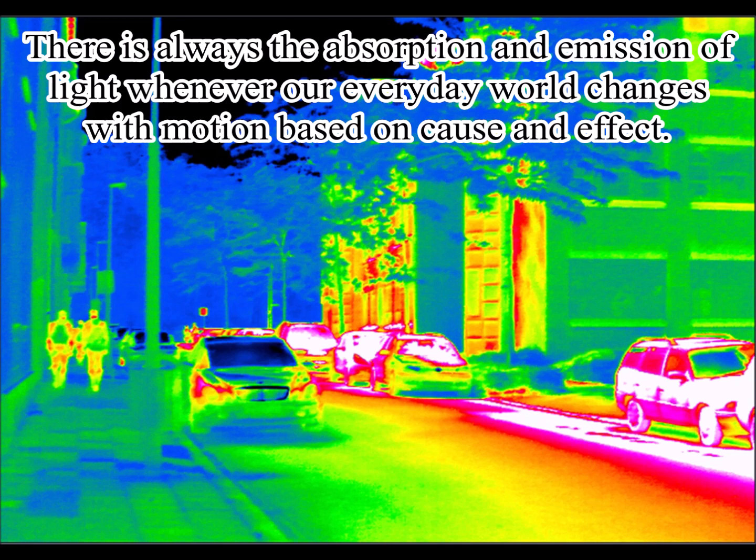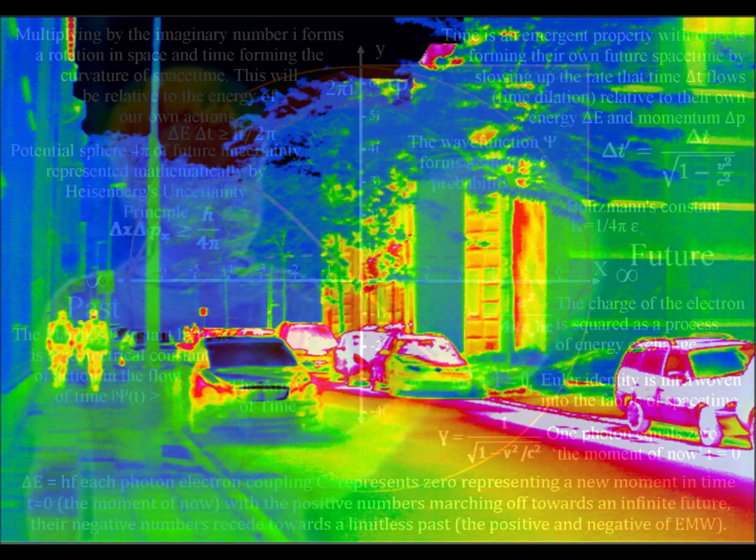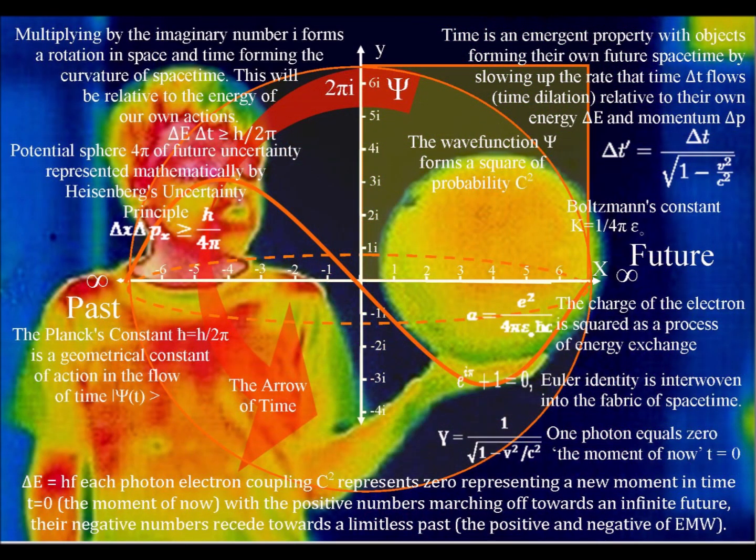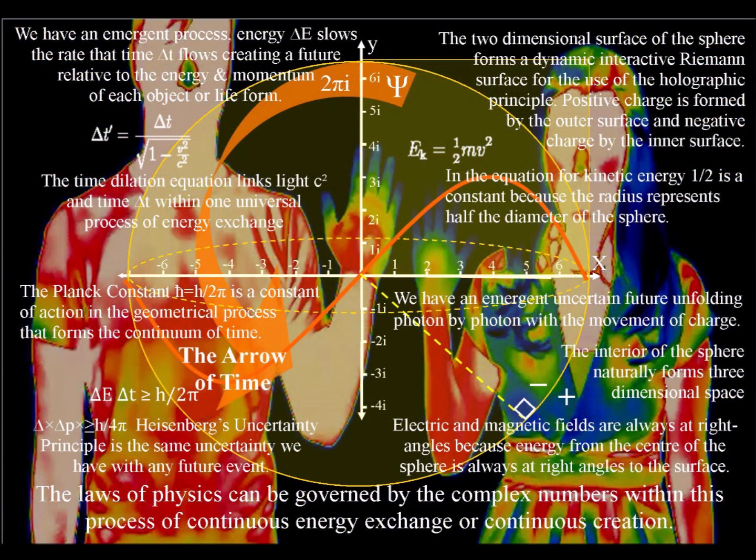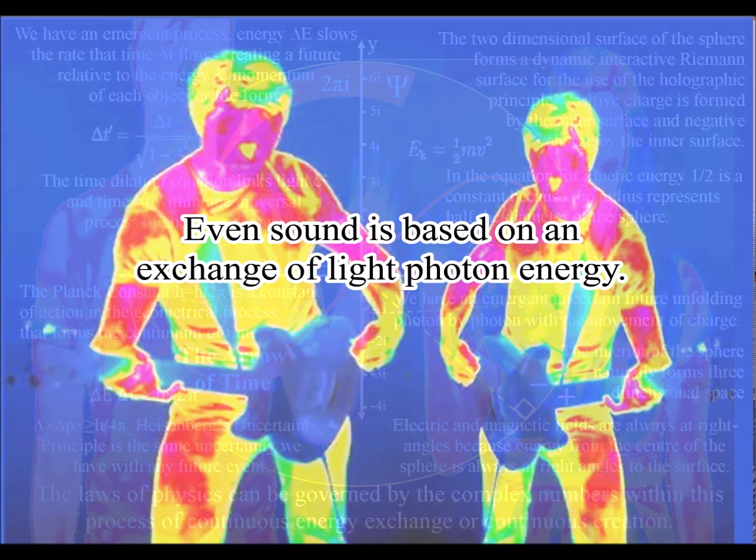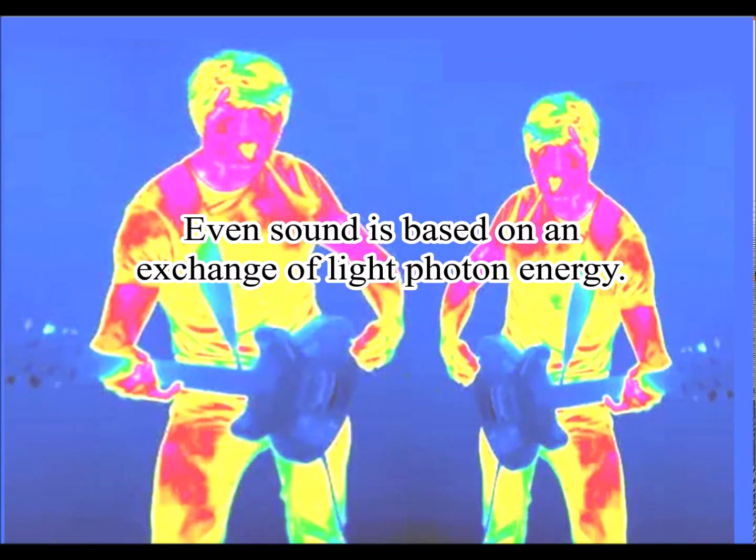Motion based on cause and effect. Therefore, it is logical that nothing could travel faster than the speed of the process that forms the characteristics of three-dimensional space and time. Within such a process, the speed of light is the maximum speed of causality.